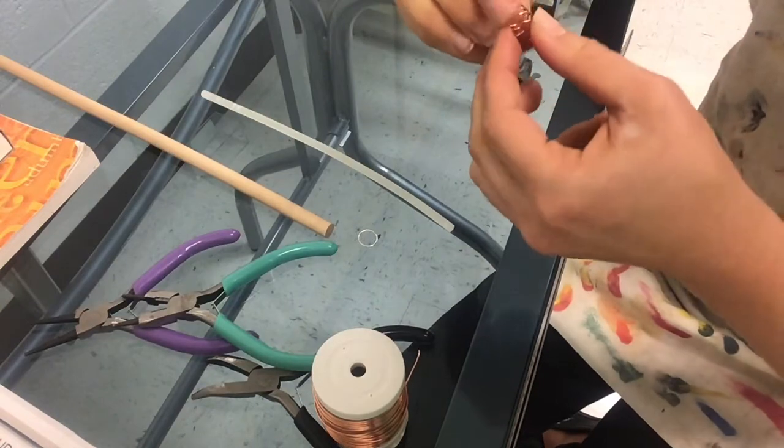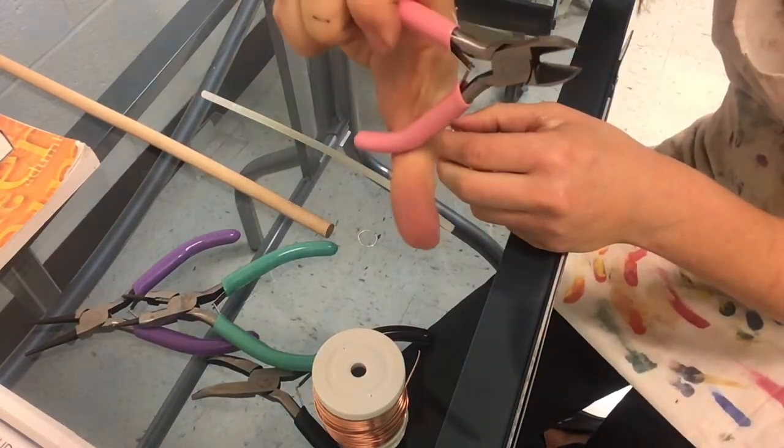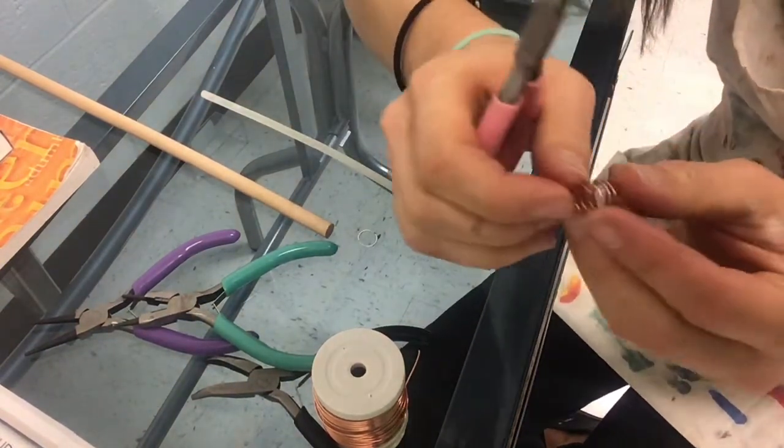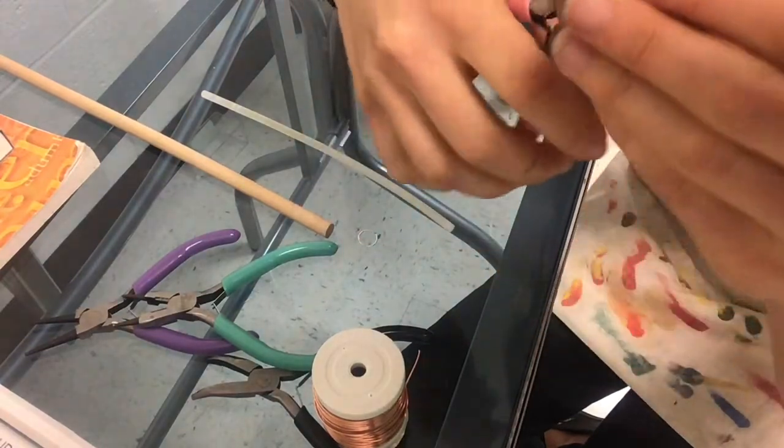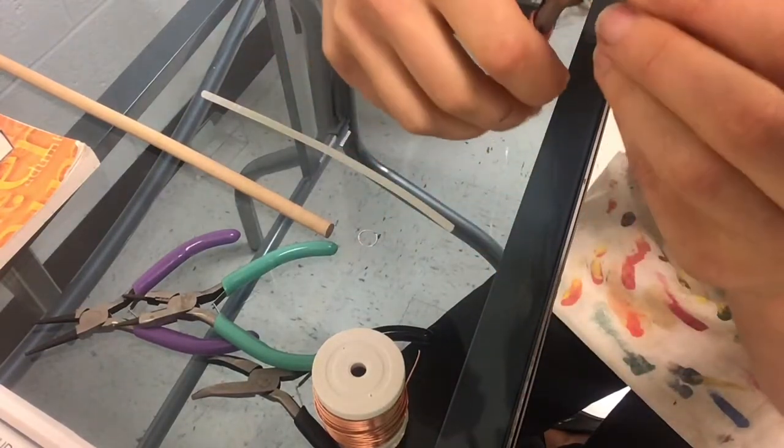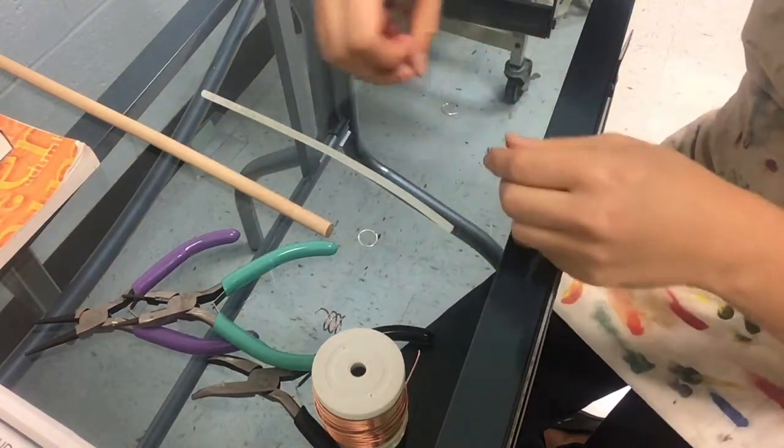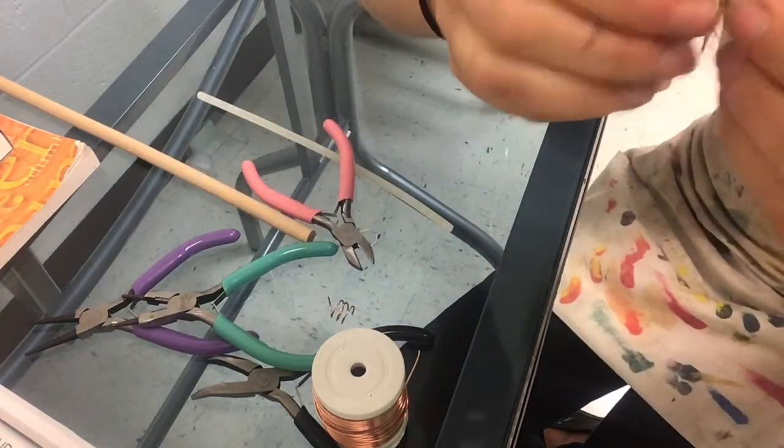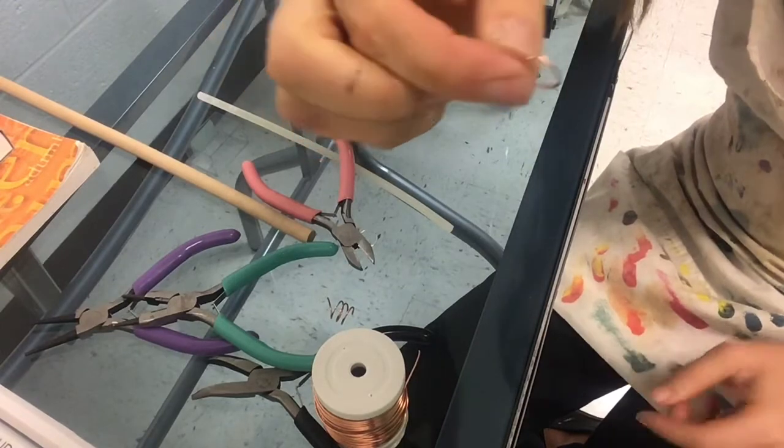And that is where your cutters come in handy. Get your cutters, make sure they're the cutters. The needle nose pliers are not going to cut. What you're going to do is you're going to find where your ring kind of starts to overlap. And then you're going to cut. And now I have something that is a perfect circle for our jump ring.